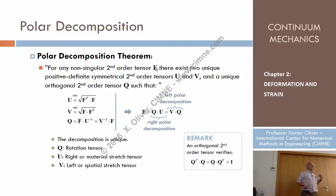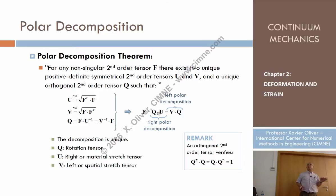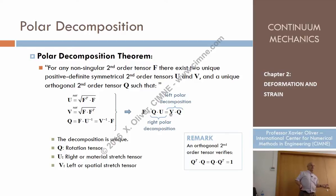Whenever I have a second-order tensor — in our case I'm interested in the deformation gradient tensor F — this second-order tensor can always be decomposed as the dot product of two tensors: Q times U, or B times Q. So far I have introduced Q in both expressions, and also one tensor called U which is on the right-hand side, and one tensor called B which is on the left-hand side.